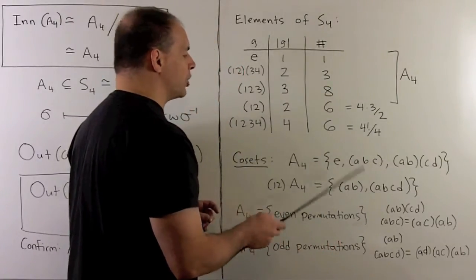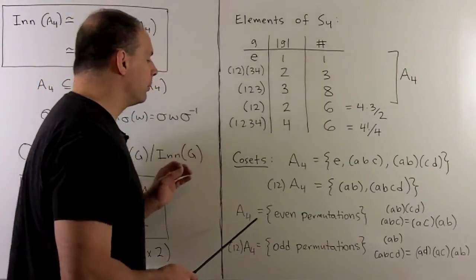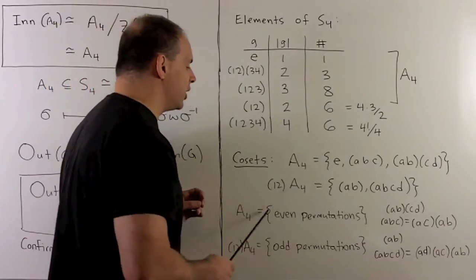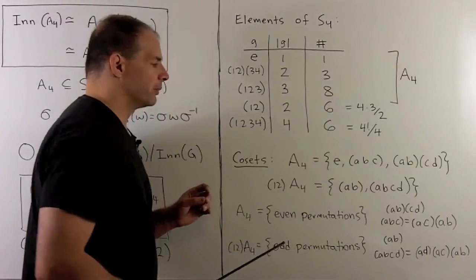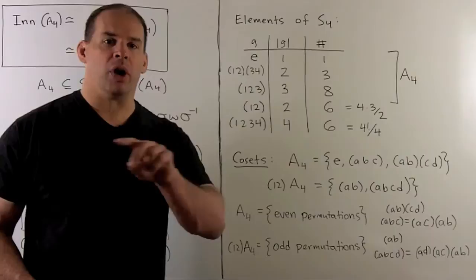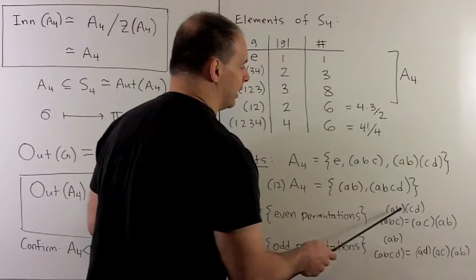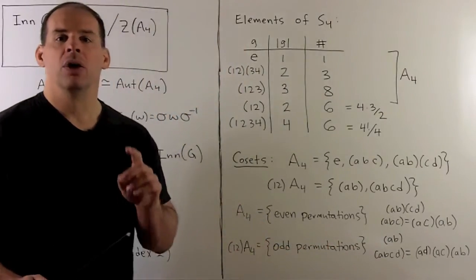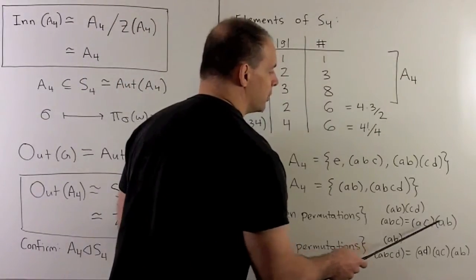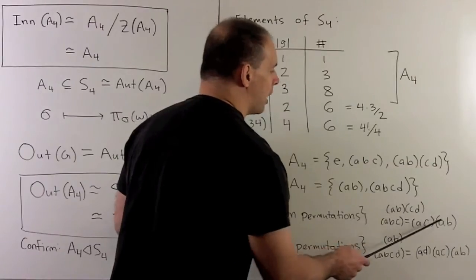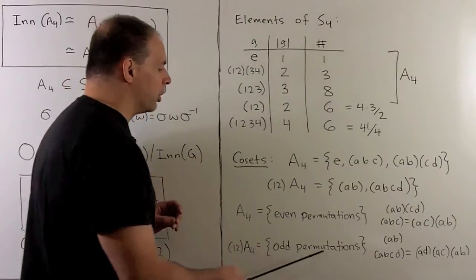What's the quality being measured here with this split? What's the equivalence relation? A4 is collecting all the even permutations, (1,2)·A4 is collecting all the odd permutations. The products of disjoint two cycles have an even number of two cycles. For a three cycle, I can rewrite that as a product of two cycles. So there's always an even number of two cycles in an even permutation.